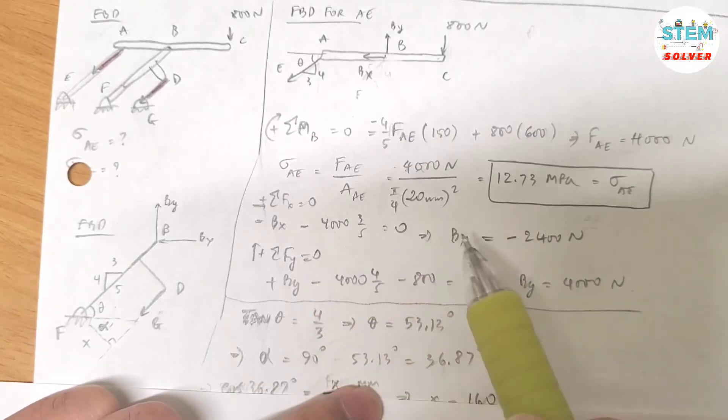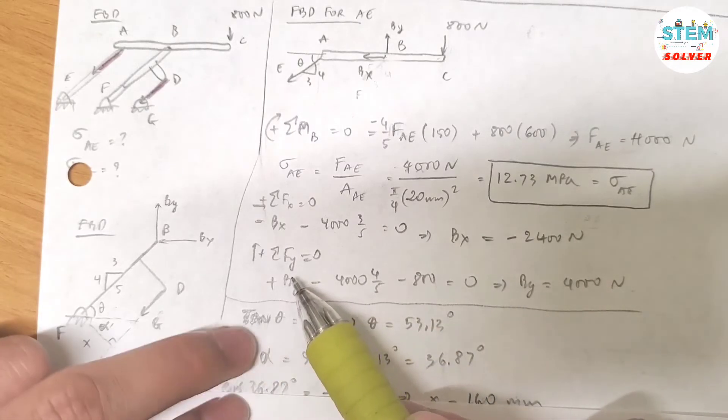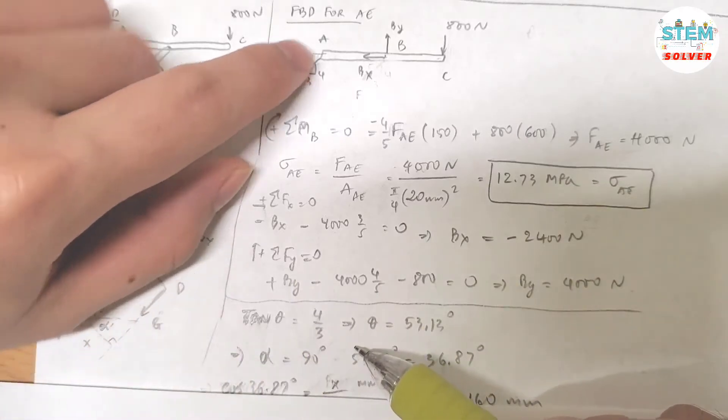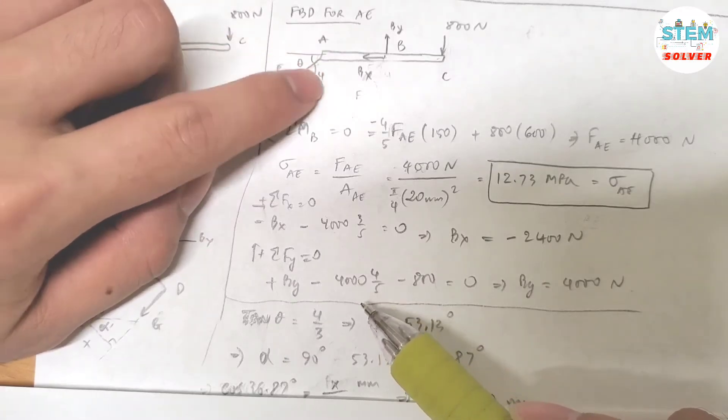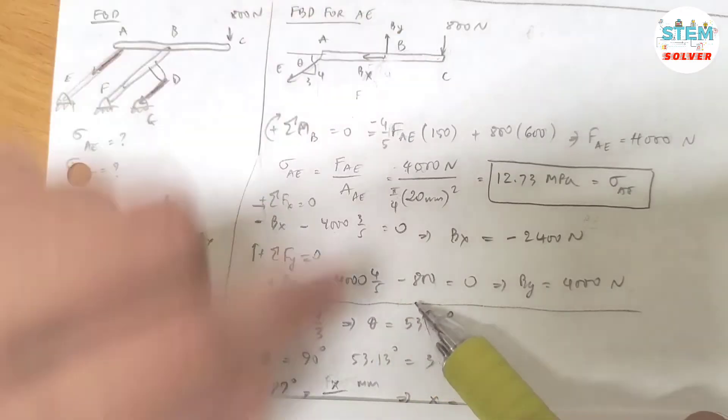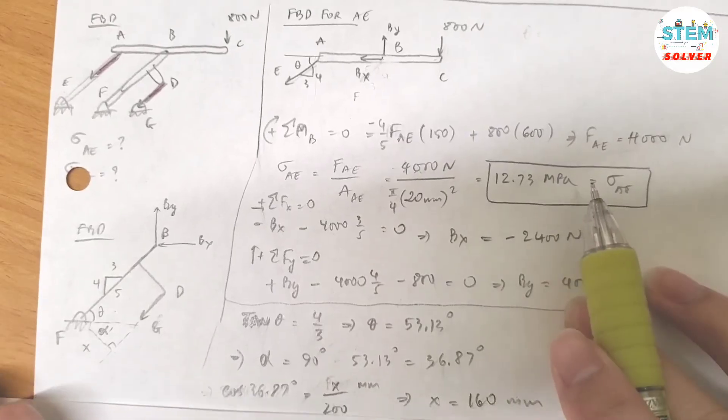So set this expression equals 0, and then you solve for Bx, I got negative 2400 newtons. Now find the forces in the y-direction, doing the same thing. I have By, positive By, minus 4000 times 4 over 5, minus 800, and set it equal to 0. Then I got By equals 4000 newtons.